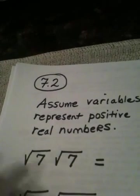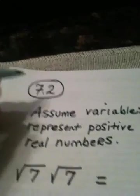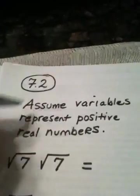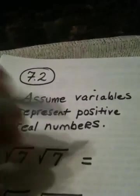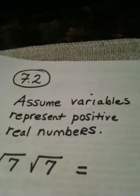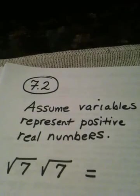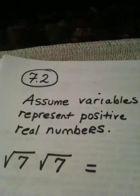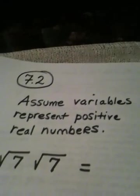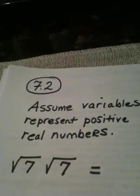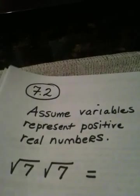Ladies and gentlemen, let's look at section 7.2. The important part of the directions tells us to assume the variables represent positive real numbers. What that basically means is throughout this whole section, if an answer contains a variable, you may assume it's positive, so you don't need to worry about slapping on absolute value bars when the index is even.